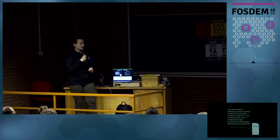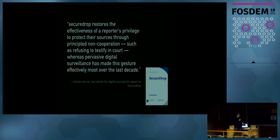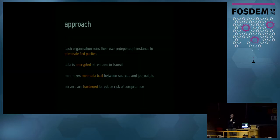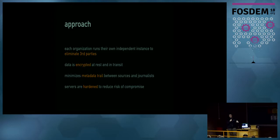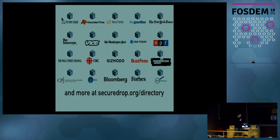That's the problem SecureDrop is trying to solve — to restore the privilege of reporters to protect sources in a meaningful way. The approach is to eliminate third parties from the equation. All data is encrypted at rest and in transit. We minimize the metadata trail between sources and journalists, so everything is routed through Tor. This project has been going on since 2012-2013, started by the late Aaron Swartz. Freedom of the Press Foundation took it over, and now it's in about 50-60 news organizations including the New York Times and Washington Post. The AP, which had all their phone records subpoenaed, now runs SecureDrop.